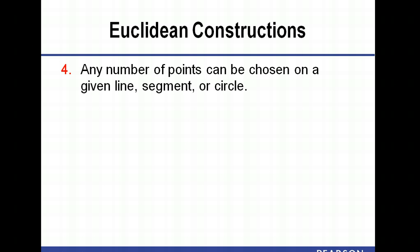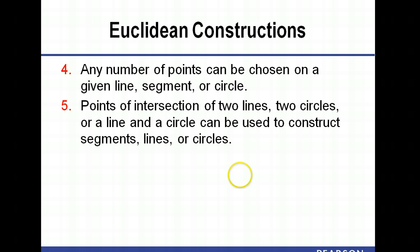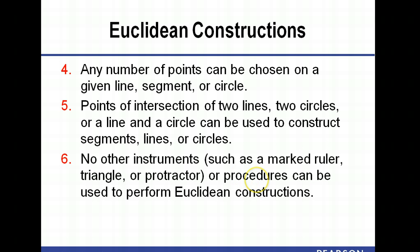Any number of points can be chosen on a given line segment or circle. Points of intersection of two lines, two circles, or a line and a circle can be used to construct segments of lines or circles. No other instruments such as a marked ruler, triangle, or protractor or procedures can be used to perform Euclidean constructions.